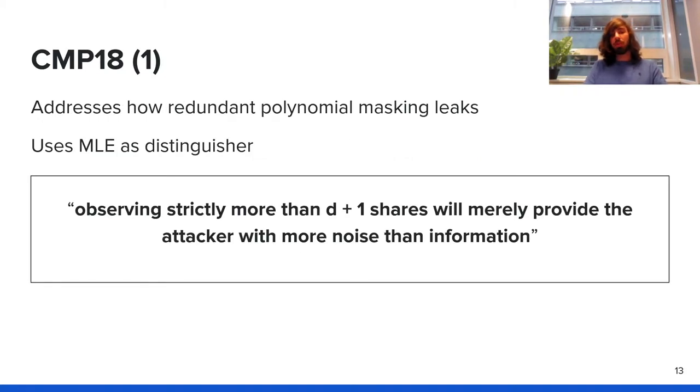Shaban, Maghrebi and Prouff in 2018 tried to address when polynomial masking leaks. They used maximum likelihood estimator as a distinguisher and observed that using strictly more than D plus 1 shares will merely provide the attacker with more noise than information. Their work shows that the attacker performs worse when attacking more than D plus 1 shares, which is very strange because there is this adage given by information theory that more information should always lead to more successful attacks. Since maximum likelihood estimator is the optimal distinguisher in their model, the attacker should not get worse. At worst, it should be the same, but not worse.